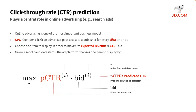In a typical case, given a set of candidate items, the ad platform chooses one item to display by maximizing the product of the predicted CTR and the advertiser bid.